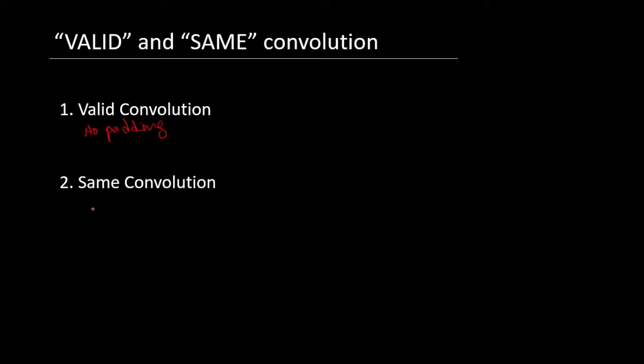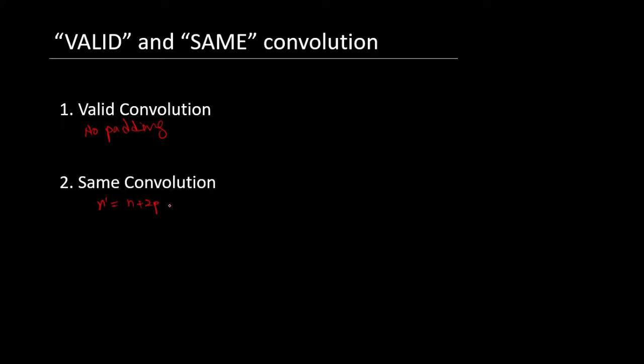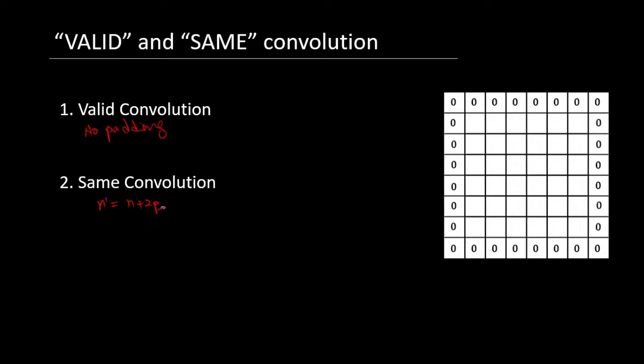So after applying some padding, the size of the new input image will be n plus 2p, where p is the amount of padding that we are applying. And in this case, n was 6 and p was 1, so finally it turned out to be 8. For the same convolution, we want our final output size to be same as this input size, which means our value of p will be equal to f minus 1 by 2.